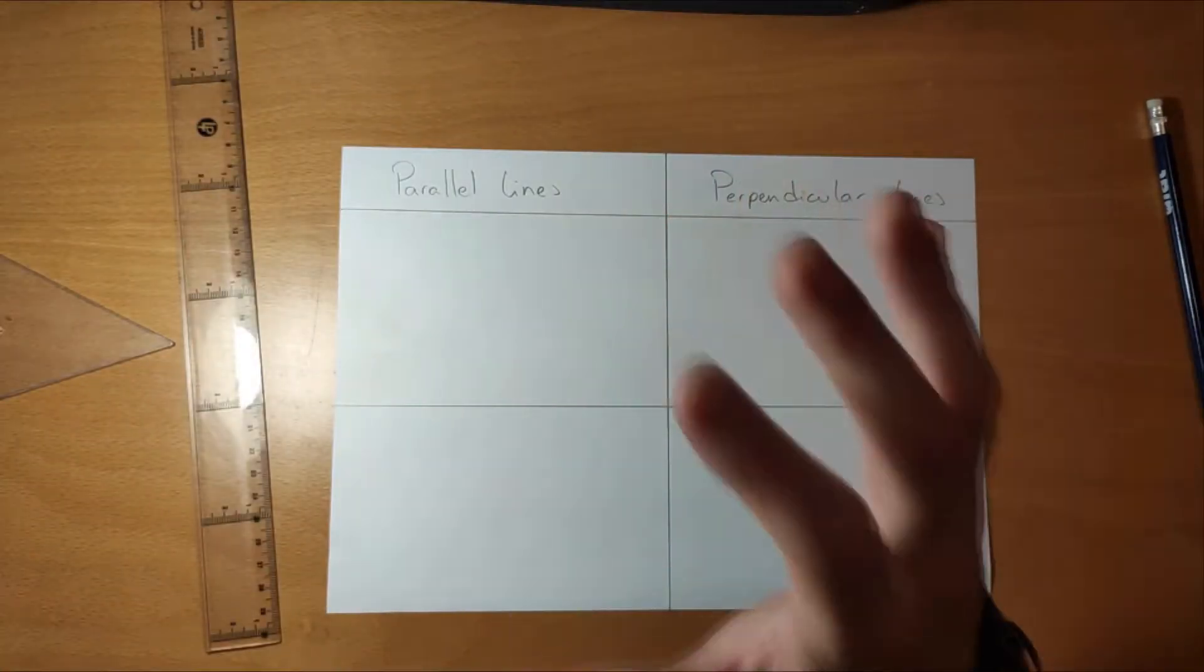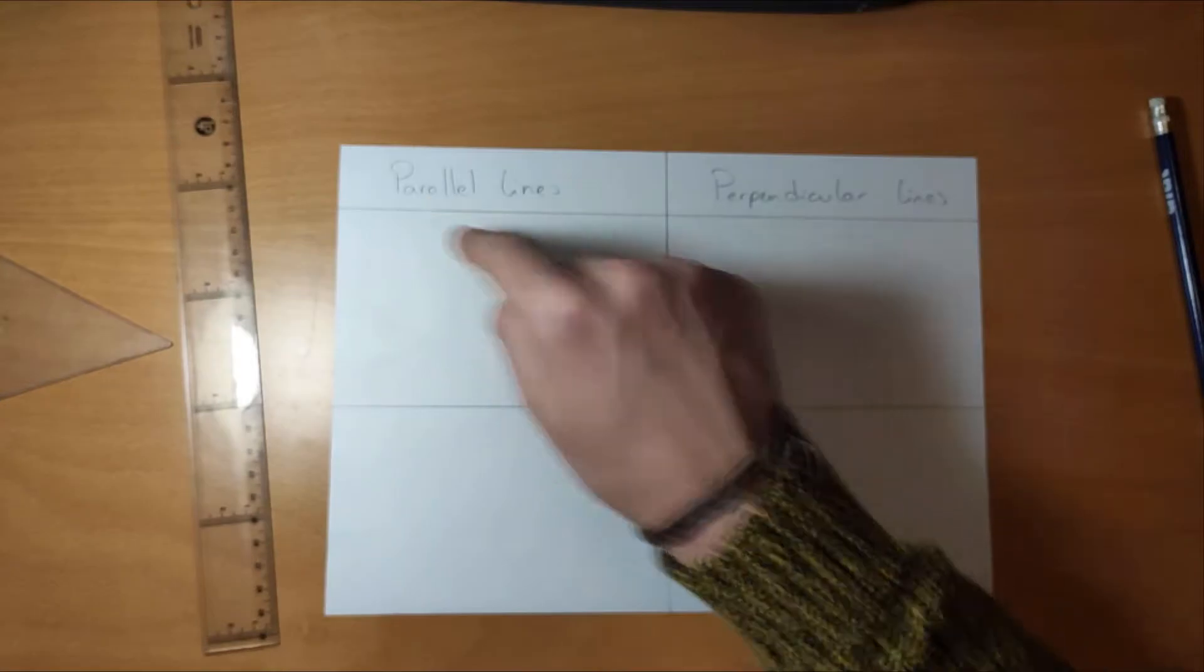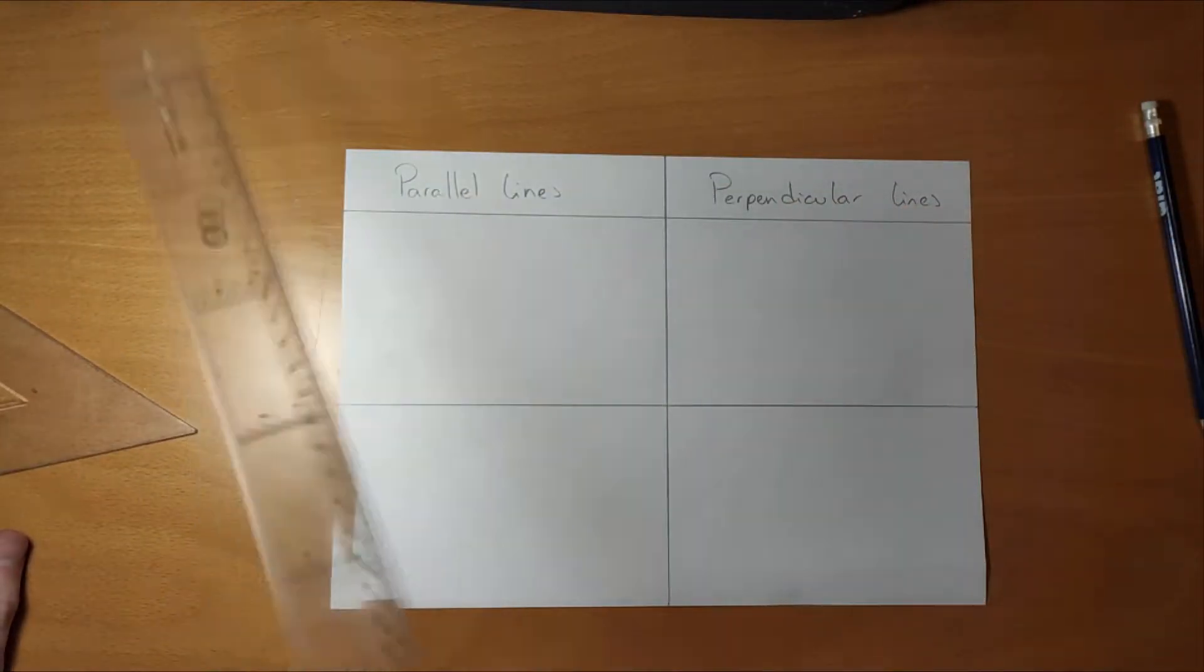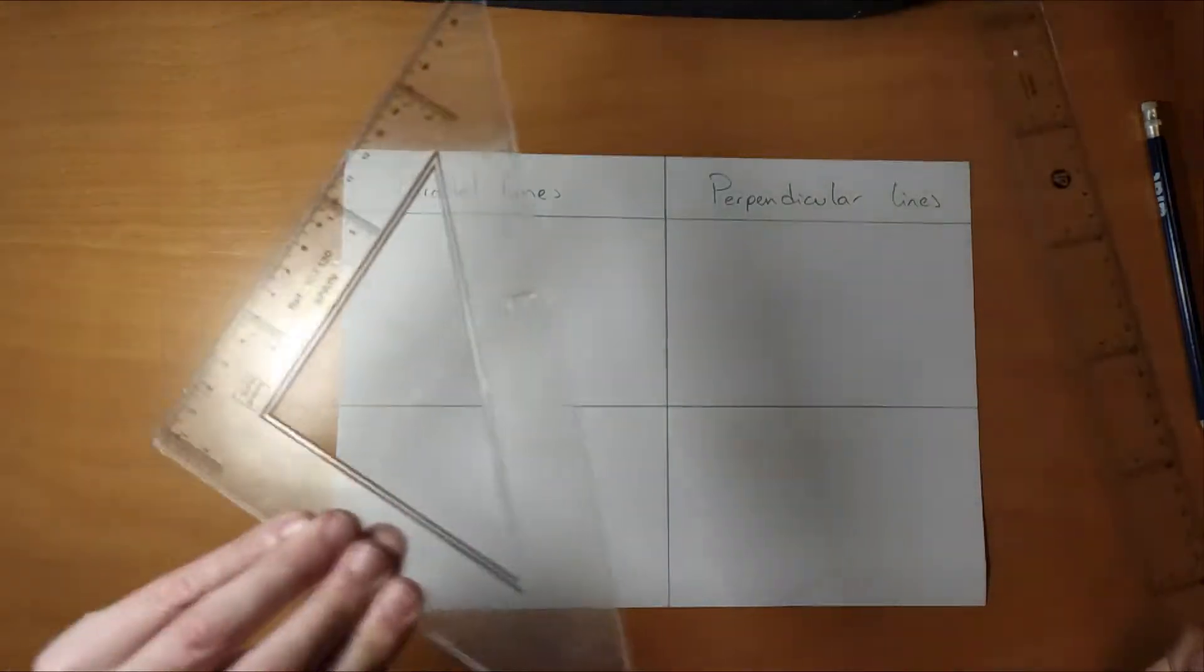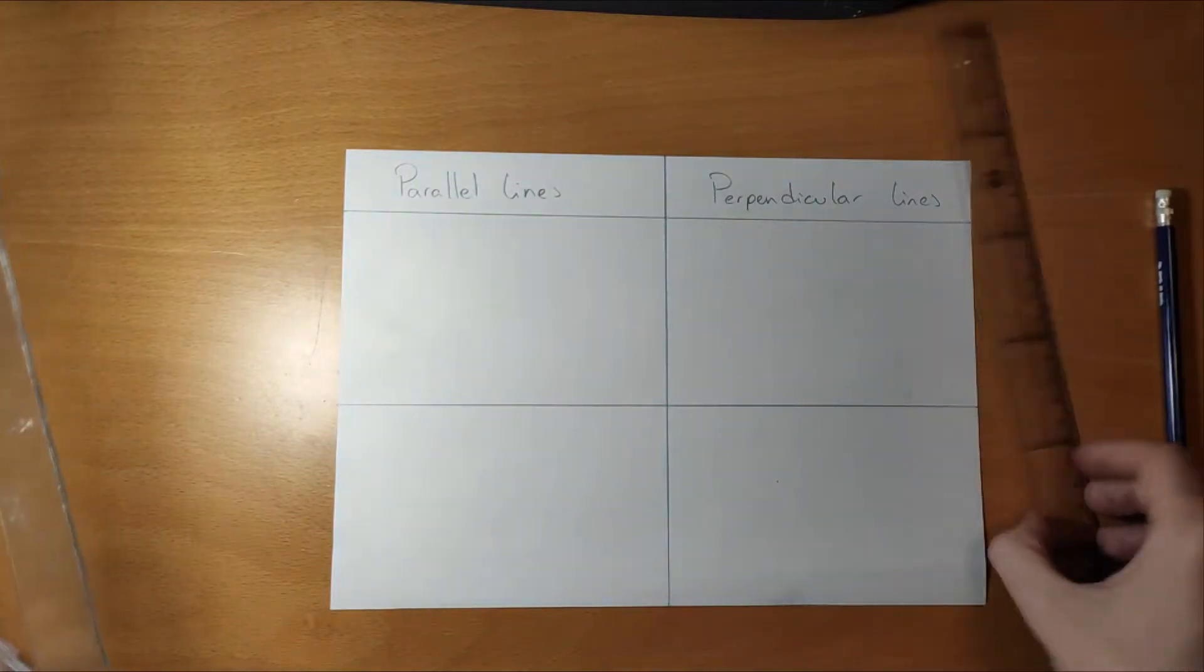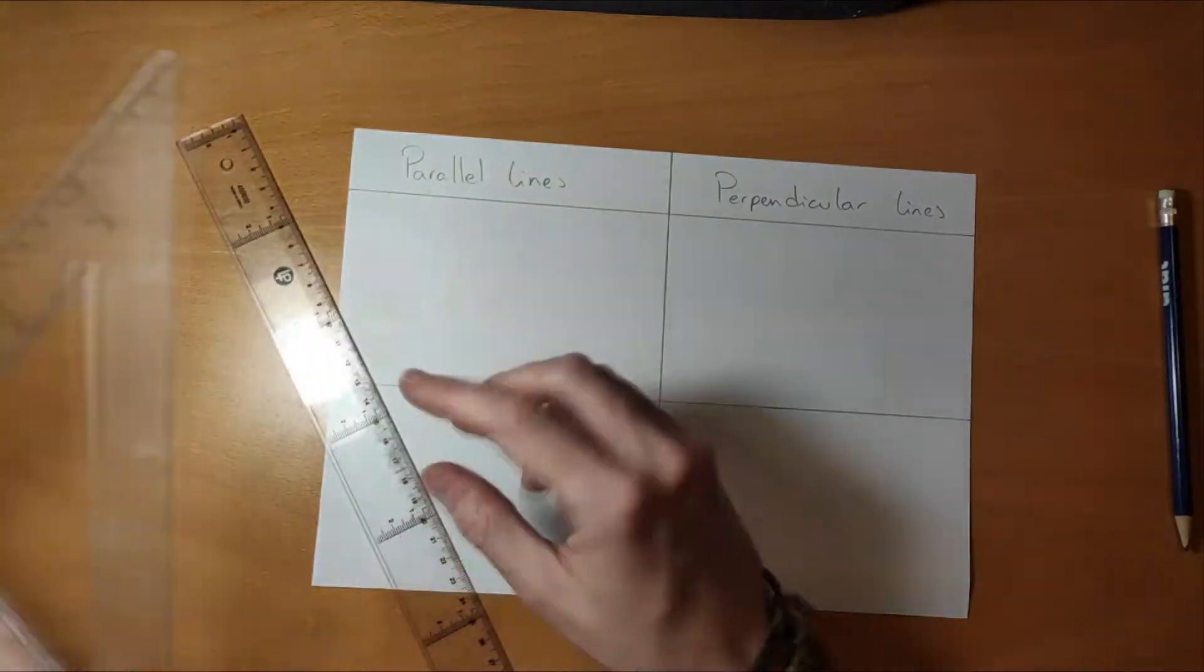Okay guys, today we're gonna learn how to trace parallel lines and perpendicular lines. For this we're gonna need a ruler, a set square, and a pencil. Let's begin with the parallel lines. I'm gonna show you a super easy way to trace them.